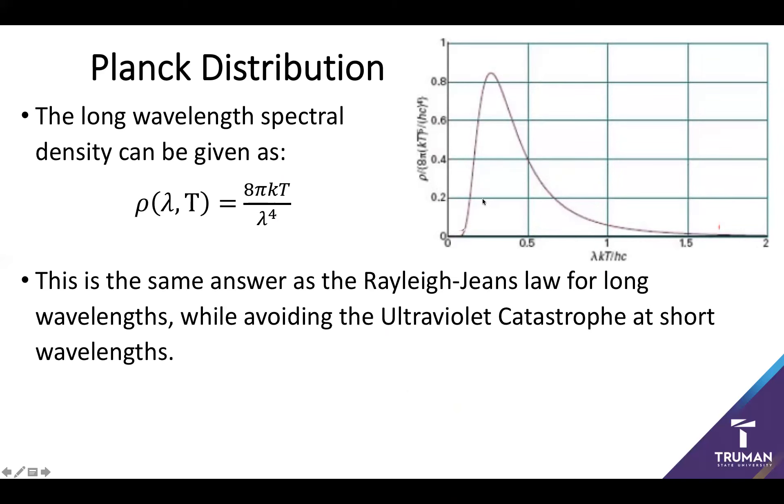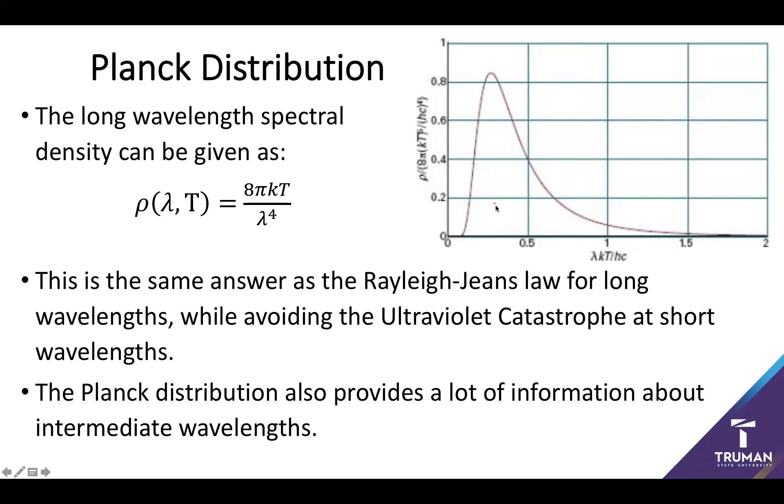What this means is that the Planck distribution essentially gets us the classical answers at long wavelengths, while giving us a value that goes to zero at short wavelengths. Likely what this means is that if I'm good at the two ends, I'm also good at the middle. The Planck distribution, in addition to doing good at long and short wavelengths, should also give us a lot of information about intermediate wavelengths. One of the reasons why this is actually really important is it turns out that being able to determine the spectral density at these intermediate wavelengths is one of the tools we make use of to determine the temperature of distant stars. If you're able to measure the spectral density coming off of a star, you can just simply figure out what temperature will give you that result. So Planck distribution was actually a huge boon to astronomical discoveries as well.